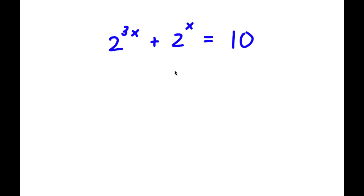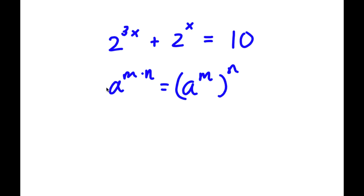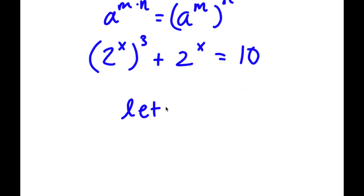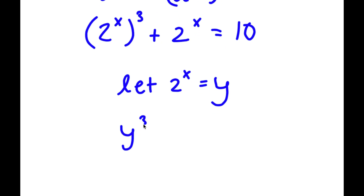In this problem, I have 2 to the power of 3x plus 2 to the power of x is equal to 10. If I have something in the form a to the power of m times n, this is the same as a to the power of m to the power of n. So 2 to the power of 3x I can rewrite as 2 to the power of x to the power of 3. Now I'm going to let 2 to the power of x equal to the variable y, so I have y to the power of 3 plus y is equal to 10.